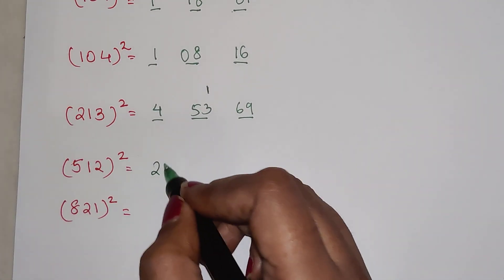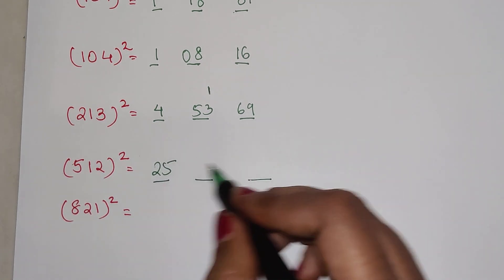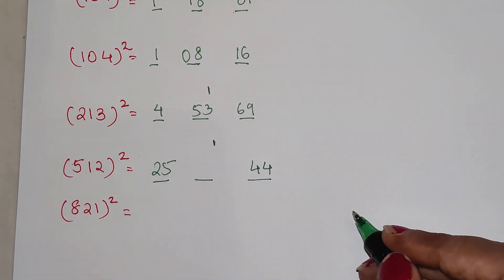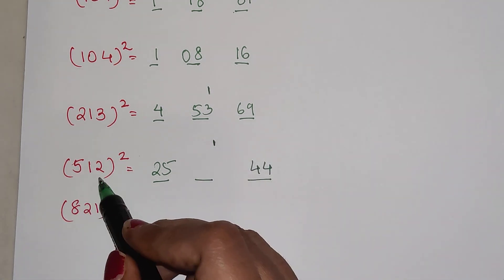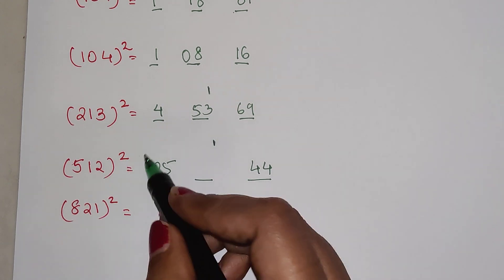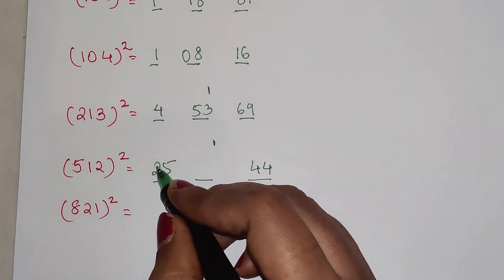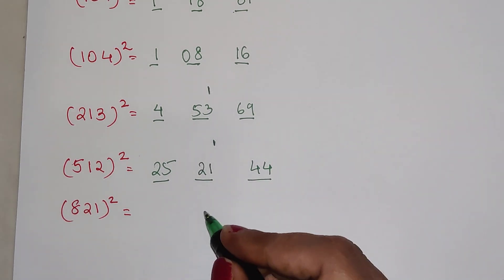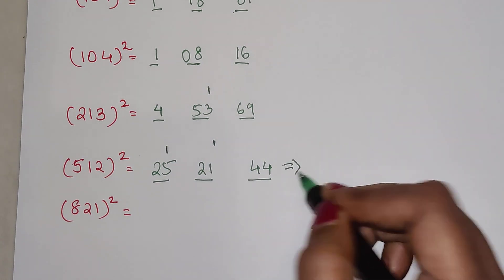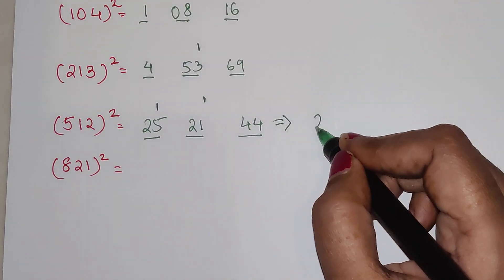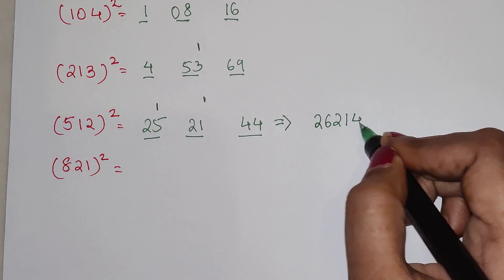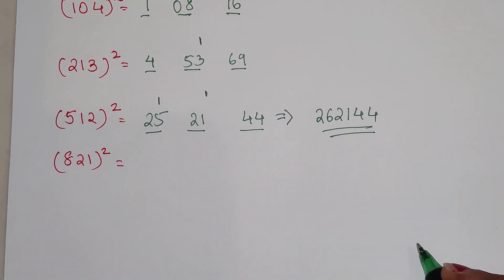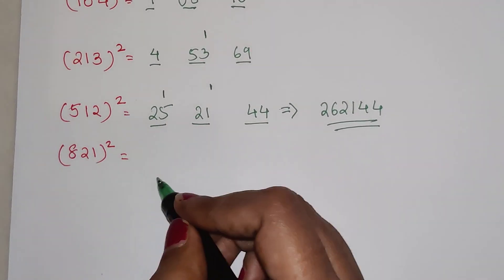For 512², we split as 5 and 12. We have 25 for the first part, then 12² = 144 — we put 1 as carry and write 44. Then 5 into 12 = 60, times 2 = 120, plus the carry of 1 gives 121. We write 21 and carry 1 to the first part, so 25 + 1 = 26. The final answer is 262144.